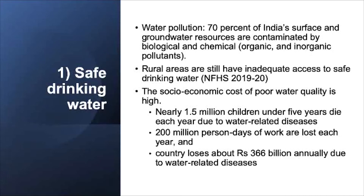Regarding water pollution, 70% of India's surface and groundwater resources are contaminated by either biological or chemical contaminants, where organic and inorganic pollutants play a major role. Rural areas still have inadequate access to safe drinking water. According to the Niti Aayog report of 2019, 75% of households in India do not have access to drinking water within the house, and 84% of rural households do not have access to piped water connections. The socio-economic cost of poor water quality is very high — nearly 1.5 million children under 5 years die each year due to water-related diseases, 200 million workdays are lost annually, and the country loses about 366 million dollars every year due to water-related diseases.